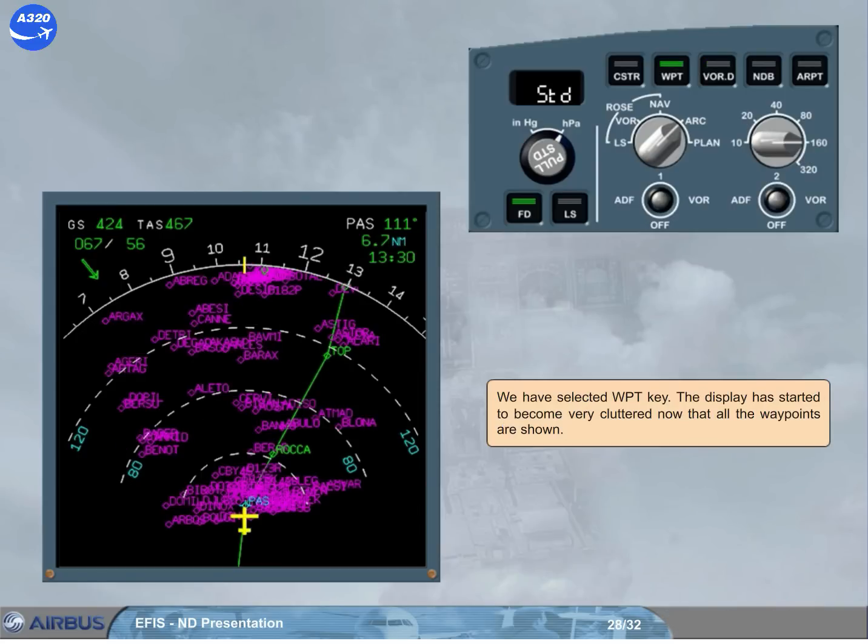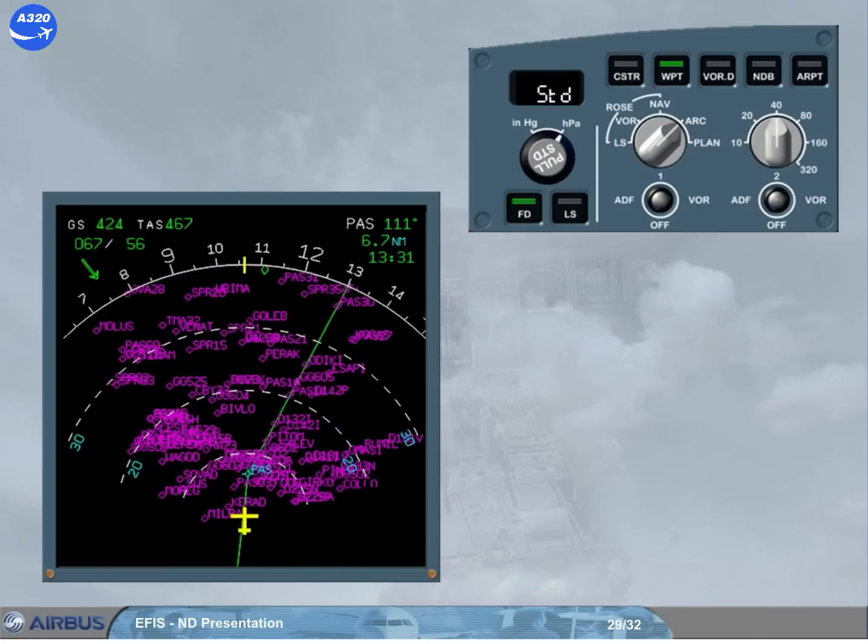We have selected waypoint key. The display has started to become very cluttered now that all the waypoints are shown. We have turned the range selector to 40. As you can see, the display is a little less cluttered. Now, let's look at the final display mode.